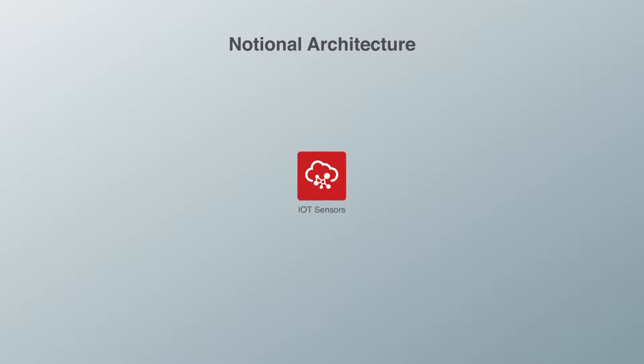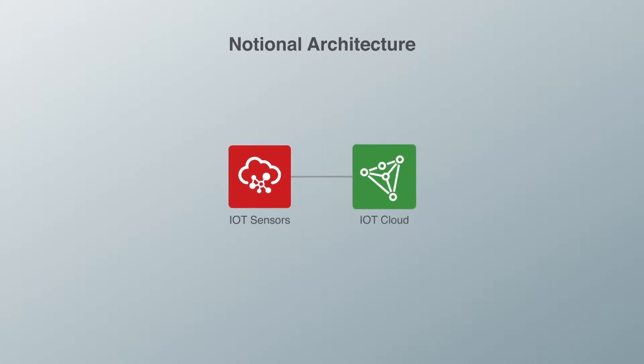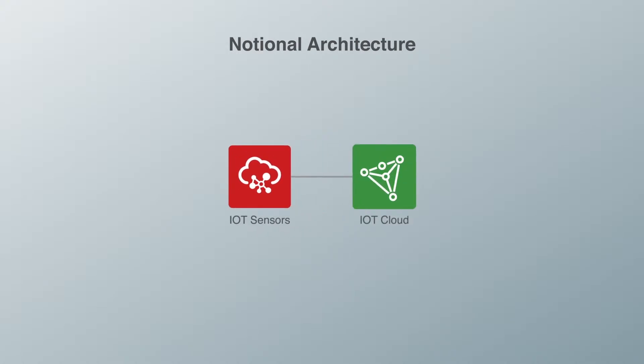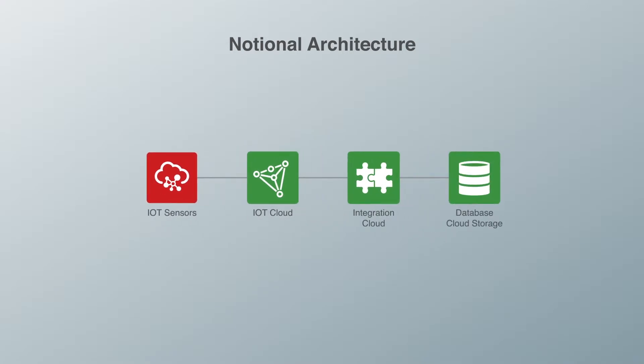Now that we have seen the demo, let's look at the data flow diagram — the notional architecture for this particular demo. As you can see, we make use of sensor data from sensors such as the online sensors, and we use an in-house Node.js application to pull the sensor data in real time into Oracle Internet of Things Cloud Service, which is then streamed into the Oracle Database.